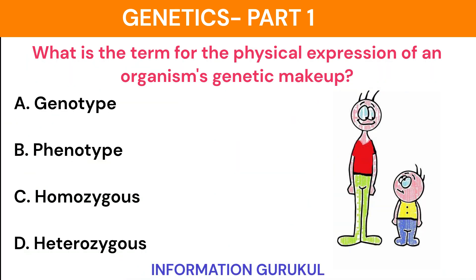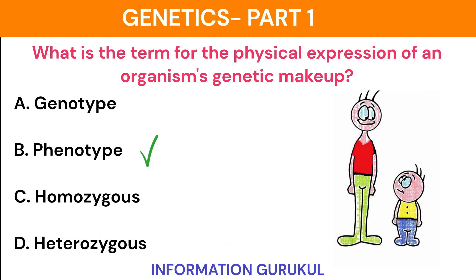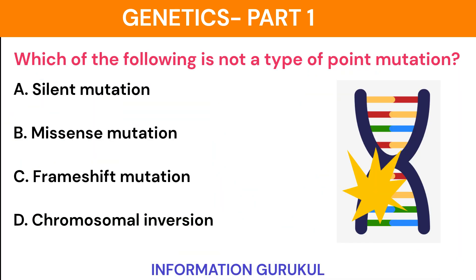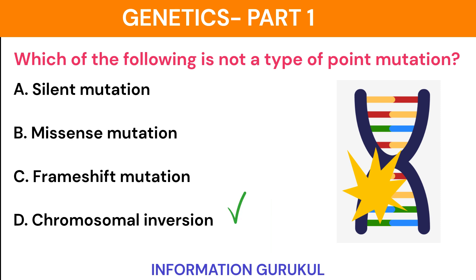What is the term for the physical expression of an organism's genetic makeup? Phenotype. Which of the following is not a type of point mutation? Chromosomal inversion.